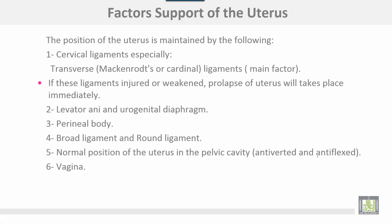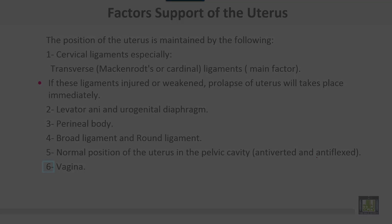Factors that support the uterus: number one, the position of the uterus is maintained by the cervical ligaments, especially the transverse cervical ligaments, also called Mackenrodt's ligaments or cardinal ligaments — these are the main factor, and if they are injured or weakened, prolapse of the uterus will take place. Other supports include the levator ani, the urogenital diaphragm, the perineal body, the broad ligament, and the round ligament. The normal position of the uterus in the pelvic cavity is anteverted and anteflexed.